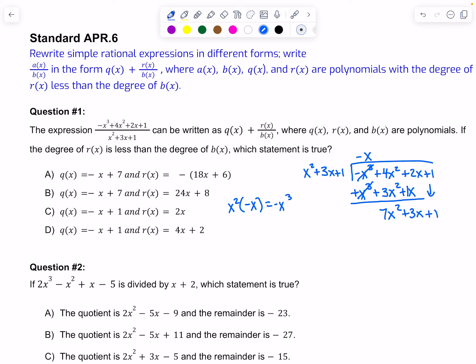Then we'll bring down the 1 and start over. X squared times what would give us 7x squared? That would just be 7. So we're going to put plus 7 at the top and multiply it by what's out front. 7 times x squared is 7x squared. 7 times 3x is 21x. And 7 times 1 is 7.